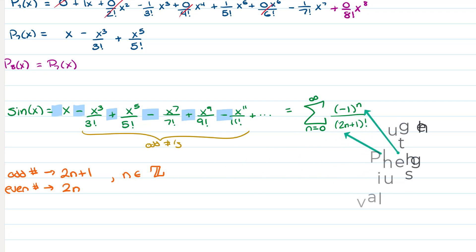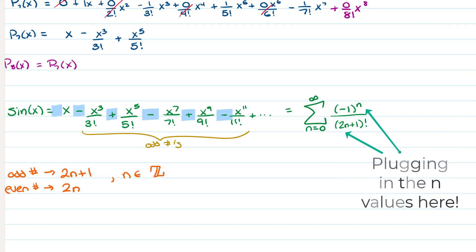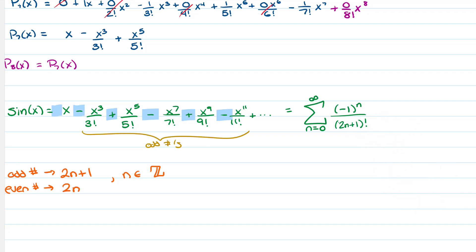The denominator is (2n+1)! — when I plug in n = 0 I get 1!, when n = 1 I get 3!, when n = 2 I get 5! — perfect. And the power is x^(2n+1). So sine of x = Σ (−1)ⁿ / (2n+1)! · x^(2n+1) from n = 0 to infinity. This is what your calculator actually plugs x into when it wants to compute sine.